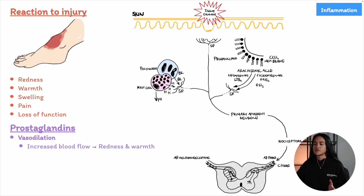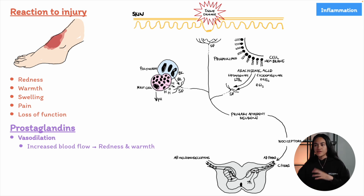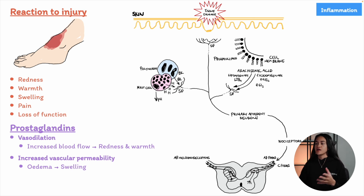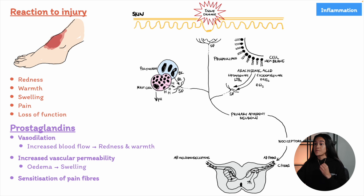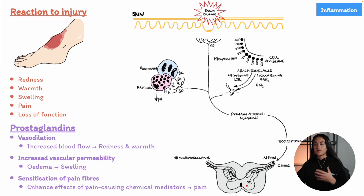This vasodilatory effect is not just because of prostaglandins themselves — they also team up with other mediators like histamine, which also promotes blood vessel widening. Together, prostaglandins and histamine enhance each other's effects, leading to a synergistic effect that enhances vasodilation. Prostaglandins also make blood vessels more permeable, allowing fluid to leak out of the bloodstream into surrounding tissues, leading to swelling or edema. Finally, they amplify the effects of pain-causing chemicals like substance P, increasing the sensation of pain during inflammation.